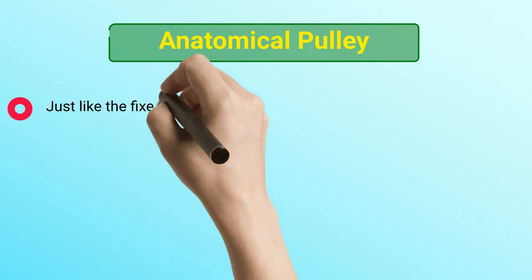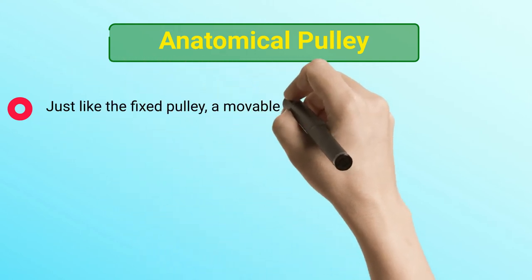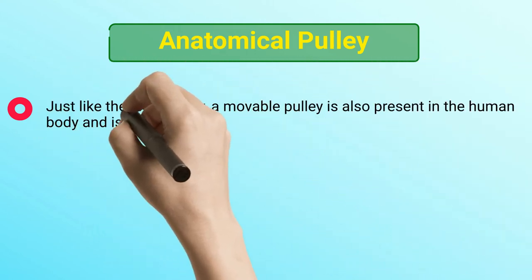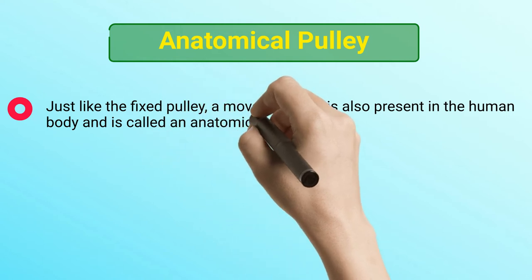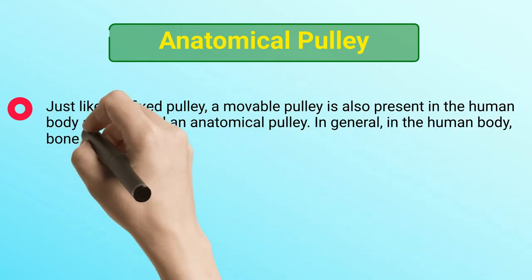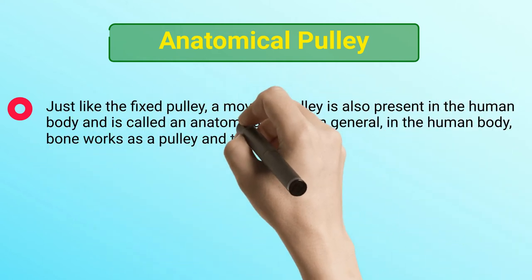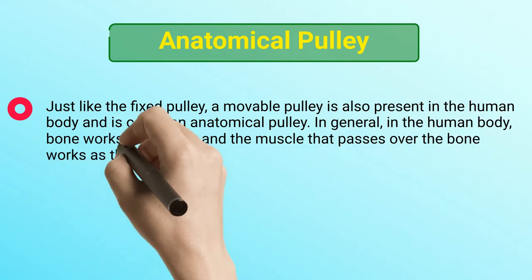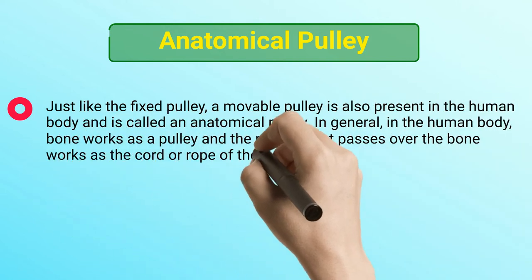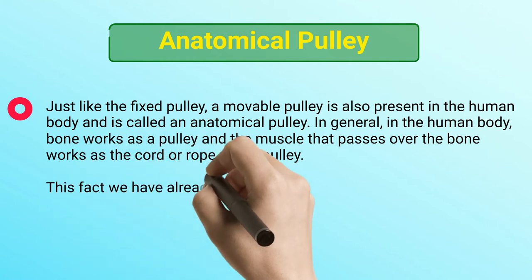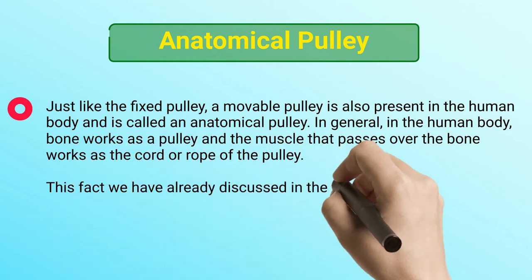Anatomical Pulley. Just like the fixed pulley, a movable pulley is also present in the human body and is called an anatomical pulley. In general, in the human body, bone works as a pulley and the muscle that passes over the bone works as the cord or rope of the pulley. This fact we have already discussed in the fixed pulley examples.